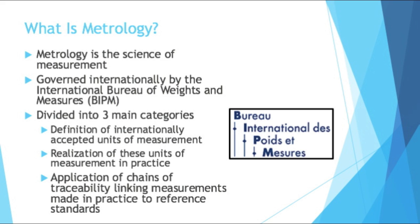Metrology is divided into three main categories, three main functions: defining internationally accepted units of measurement; realizing these units of measurement in practice; and applying chains of traceability, linking measurements made in practice to reference standards. You're going to hear traceability a few times in this video. That is huge when it comes to metrology, because when it comes to measuring things, how can you really trust the measurement you're receiving or the person telling you the measurement of something? It all ties back to traceability, which all ties back to a single standard.